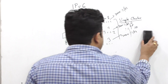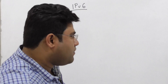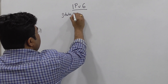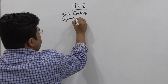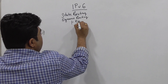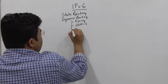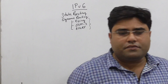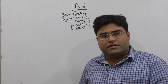Let's look at the routing process and the practical lab. We have designed the lab. First we will do static routing, then we will go for dynamic routing. We will see IPv6 dynamic routing — RIPng, OSPFv3, and EIGRP. We will cover these three routing protocols.